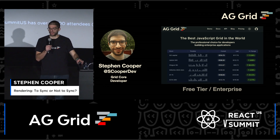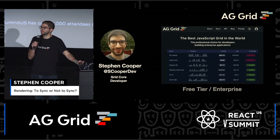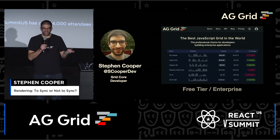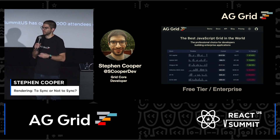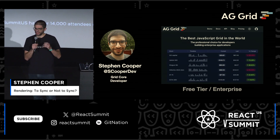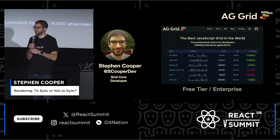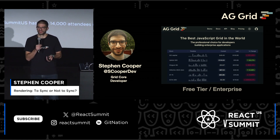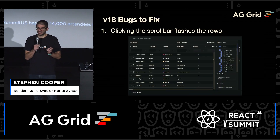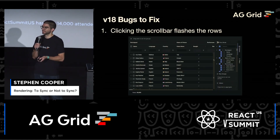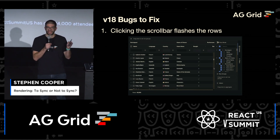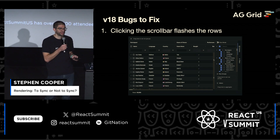I'm Steve and I work at AG Grid on the core grid team. AG Grid is what we're trying to do — create the best JavaScript data table, whether that's in React or any of the other frameworks. There's a free tier as well as the enterprise. If you want to find out more, do speak to us at the booth. But let's try and clarify what we're trying to fix, how React has changed, how we can work out what those changes are, and then how we can fix it.